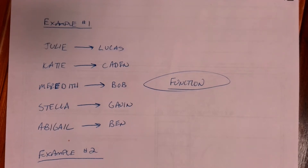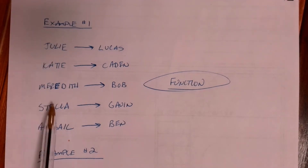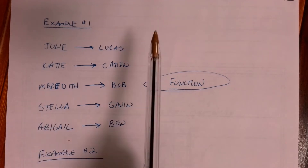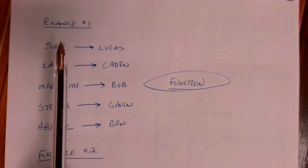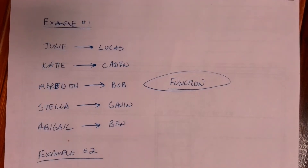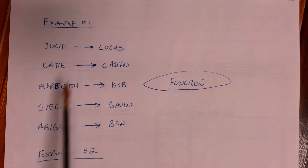We're going to talk about girls liking boys. The girls are going to be the input, on the left-hand side, and the boys are going to be the output. In terms of math, the x values would be the girls, and the y values would be the boys. A relation just has an input and an output, so all the examples I show you here are all relations.